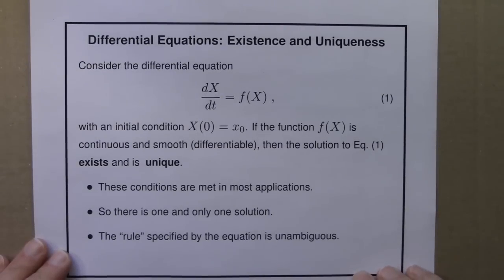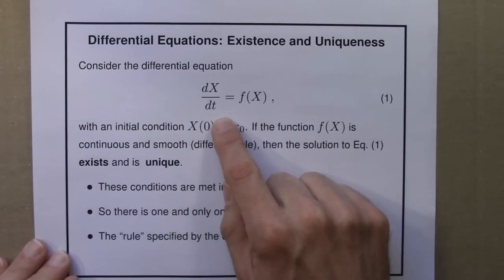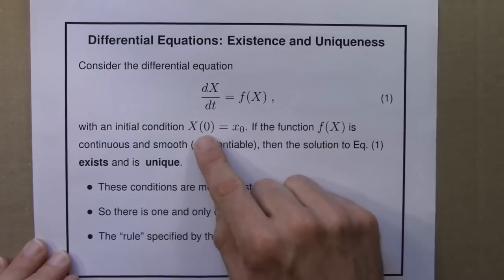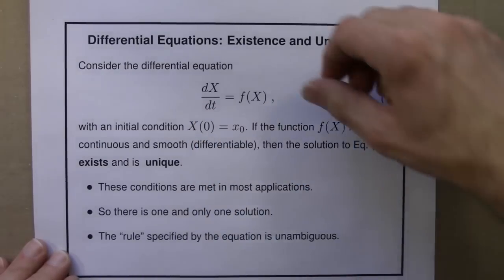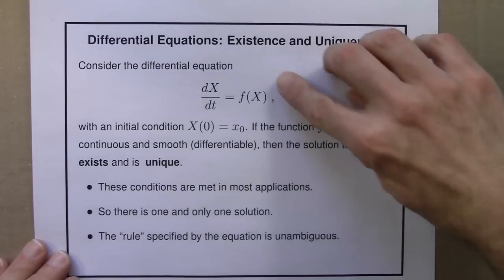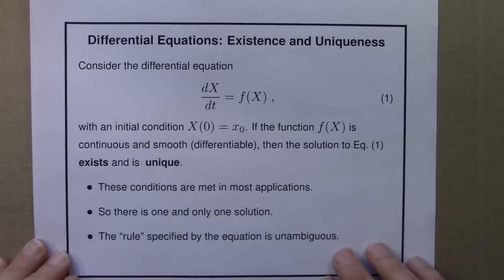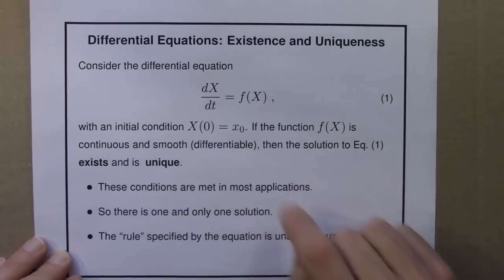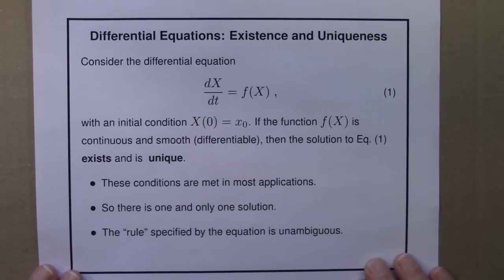Next, I want to say a little bit about the important ideas of existence and uniqueness. So let me state this result, and then I'll talk about its implications. So consider a differential equation of this kind. That's what we've been studying in this unit. And the initial condition is given. So we know the rule, we know the starting point. If this function of x is a nice function, by that I mean it's continuous, it doesn't have any jumps, and it's smooth, it doesn't have any sudden kinks or bends in it, then the solution to this equation exists and is unique.